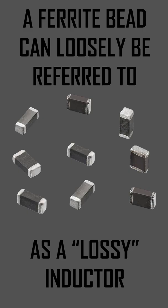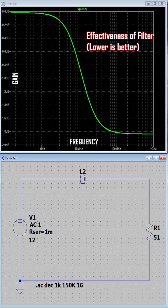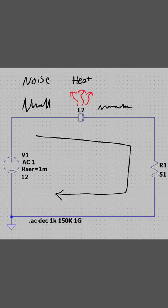A ferrite bead can be loosely referred to as a lossy inductor. By putting one in series with high frequency noise, it will filter it by dissipating it as heat.